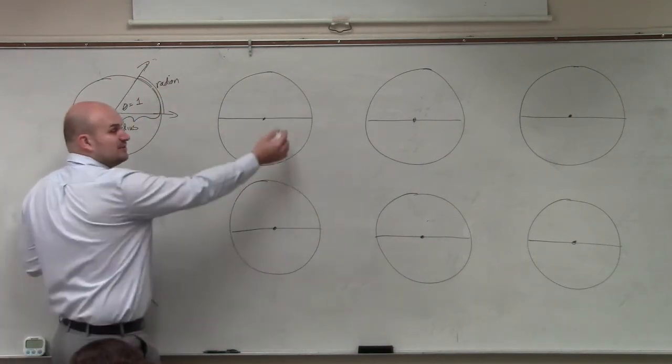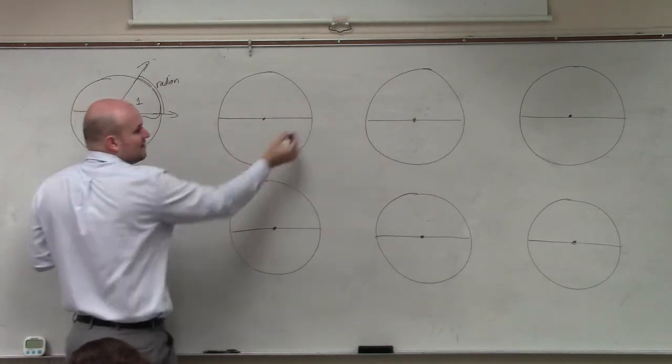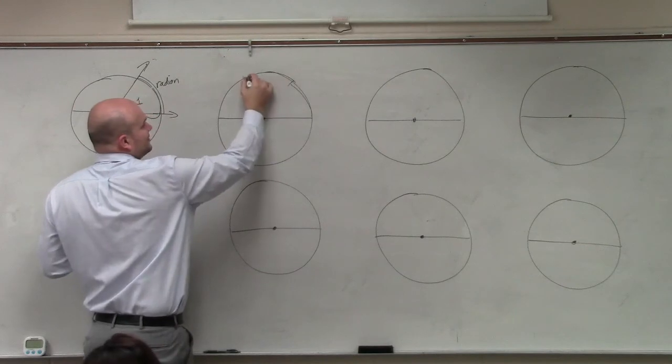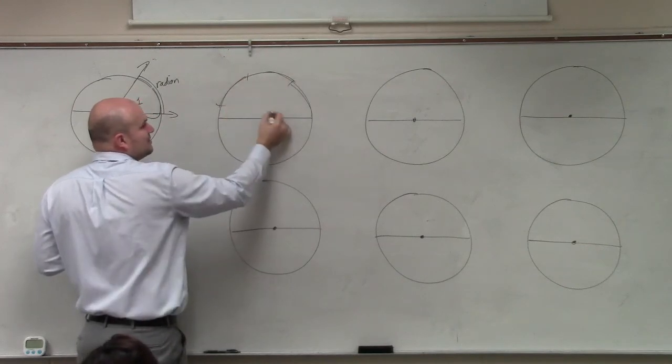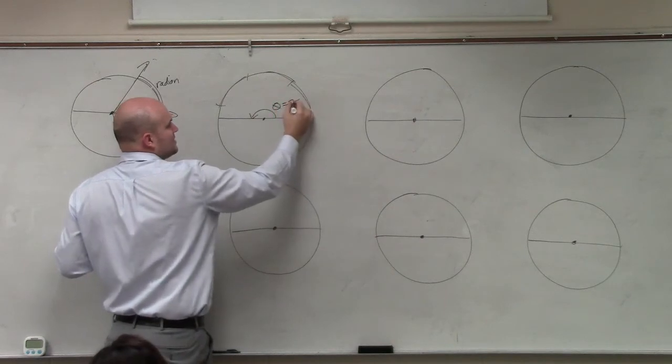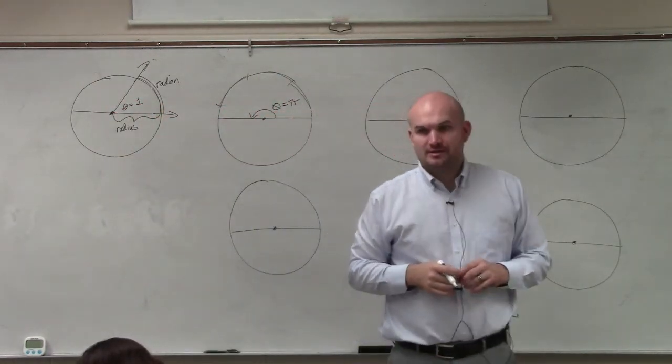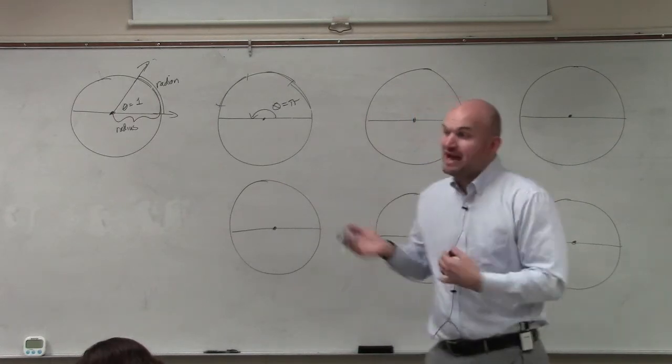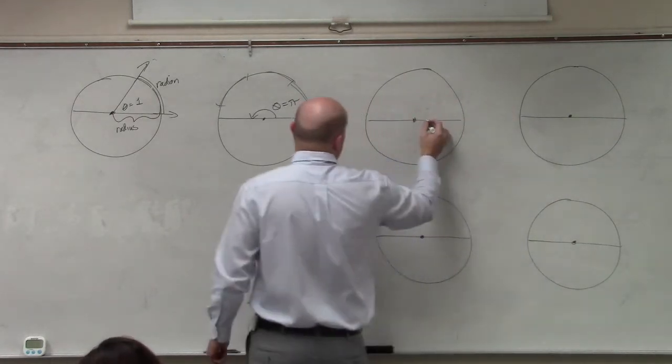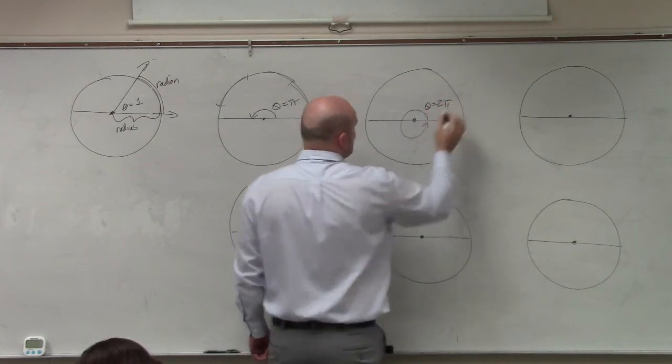Then we talked about, remember, we did this activity. We said, how many radiuses can we wrap around to get halfway around the circle? And we did that little activity. And what we found, or what we discovered, was that halfway around the circle was pi radians. And so if halfway around the circle was pi, then all the way around the circle was 2 pi.